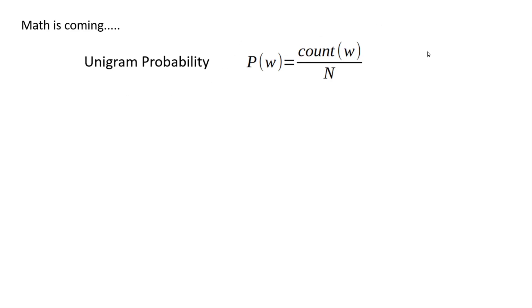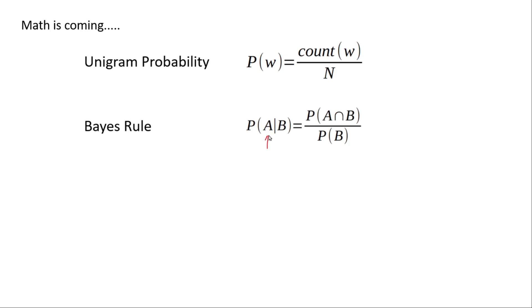Now when we go higher — bigrams and trigrams — you will need Bayes rule. I hope you remember Bayes rule from probability theory. What Bayes rule states is: you want to find the probability of event A when B is already given or has already happened, and you want to get the probability of A happening. So this is how it's calculated. B has already occurred, so you keep B in the denominator. Given that B has already occurred, we need the probability of A and B happening together — that comes in the numerator. So A and B happening together divided by only the probability of B happening — that's where you get the probability of A happening given that B has already happened.